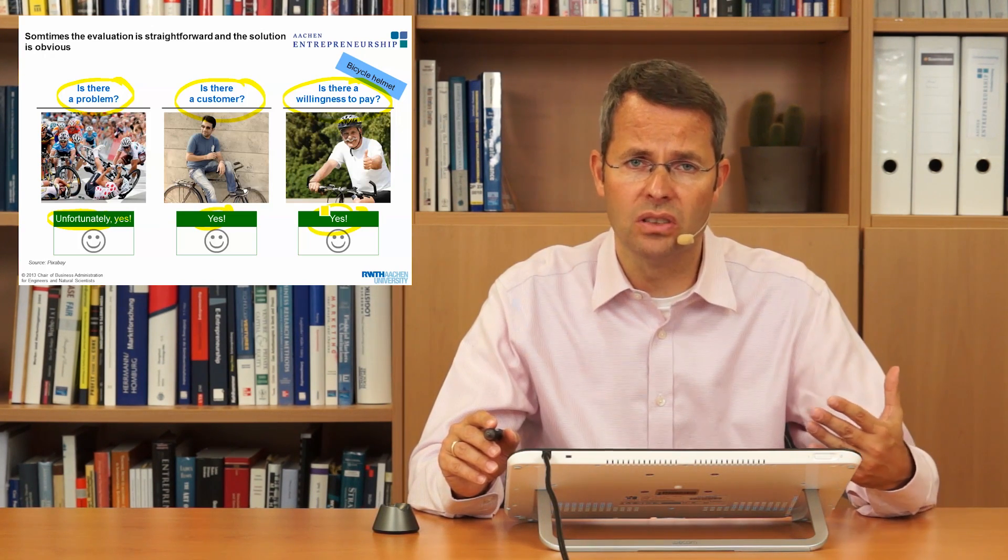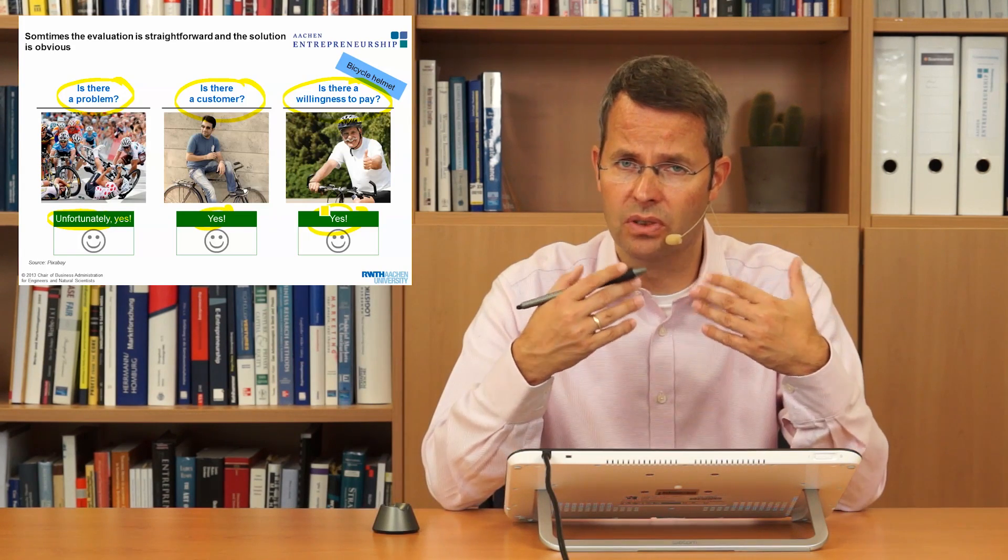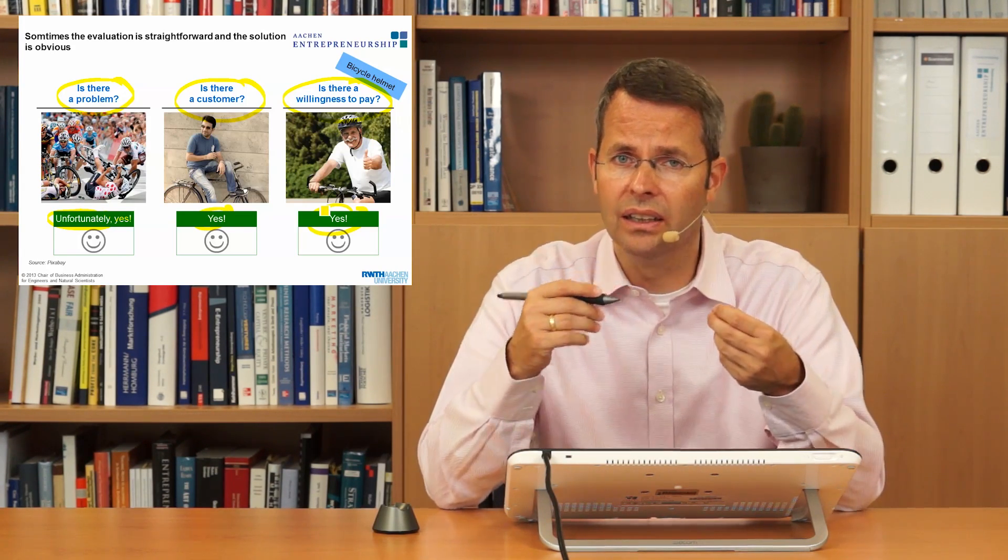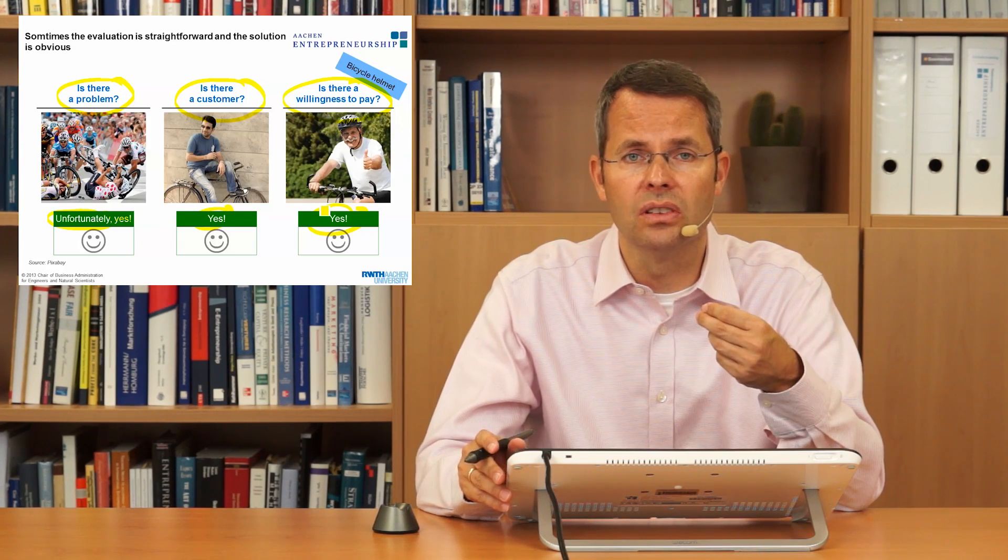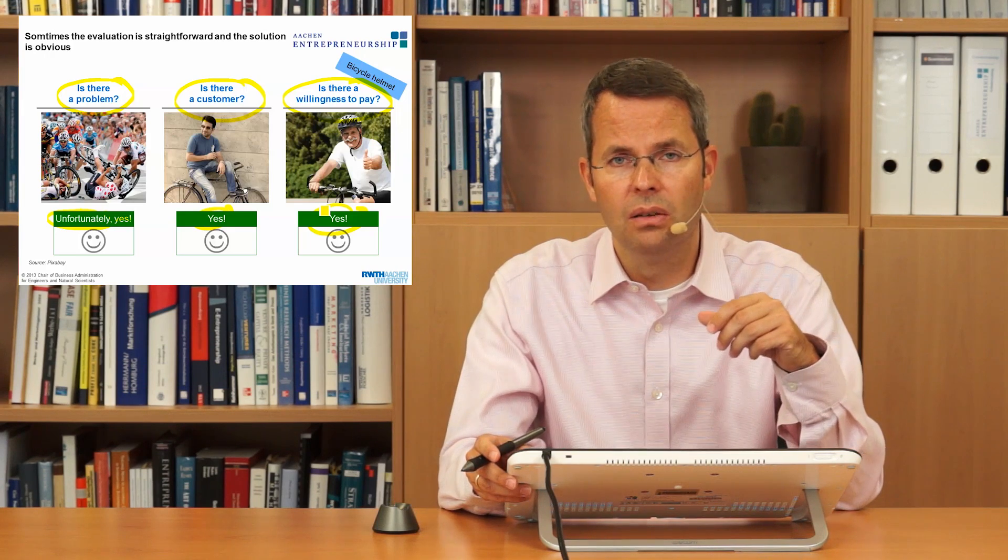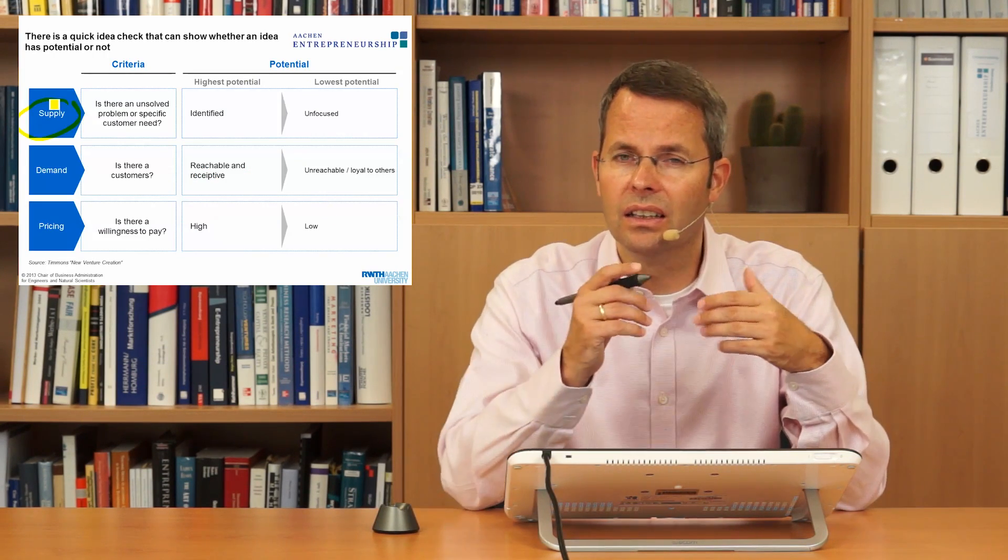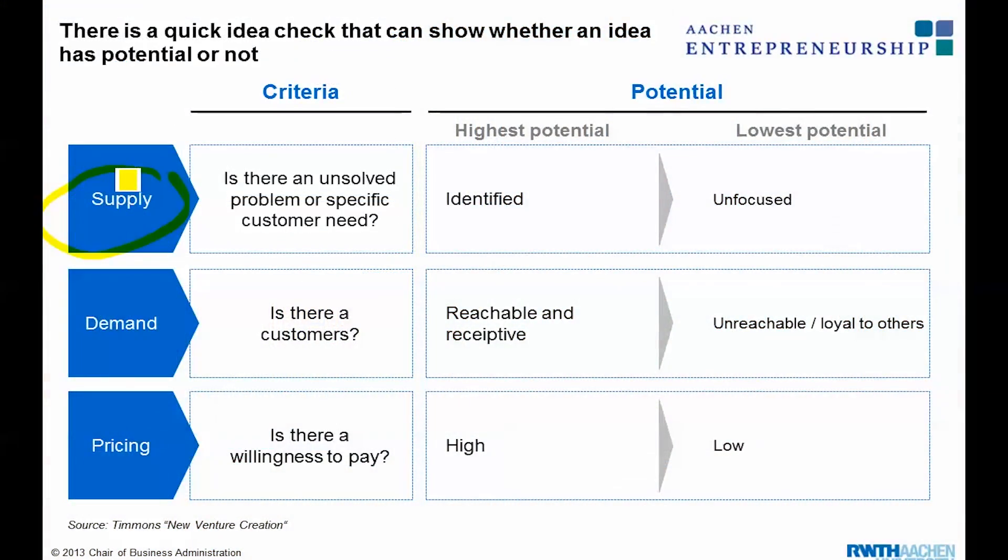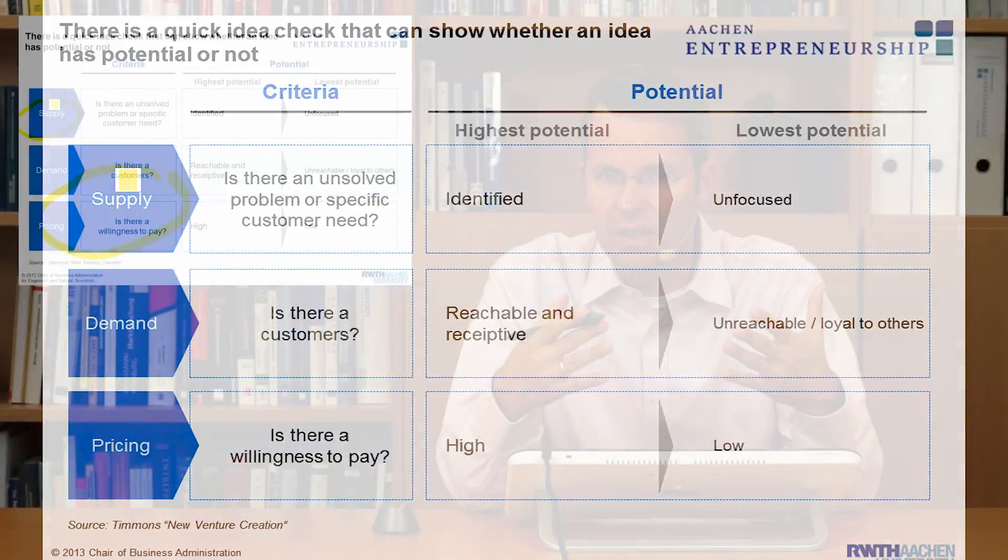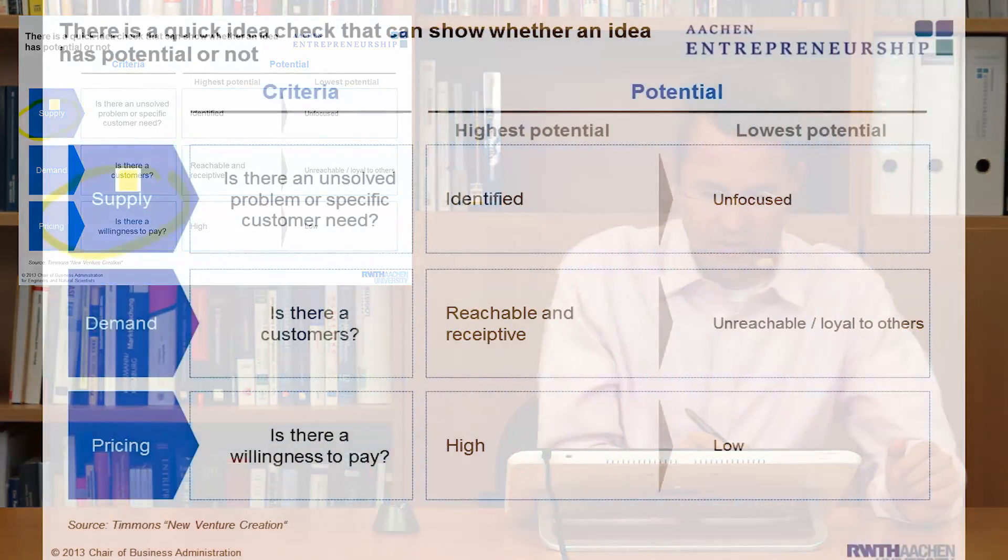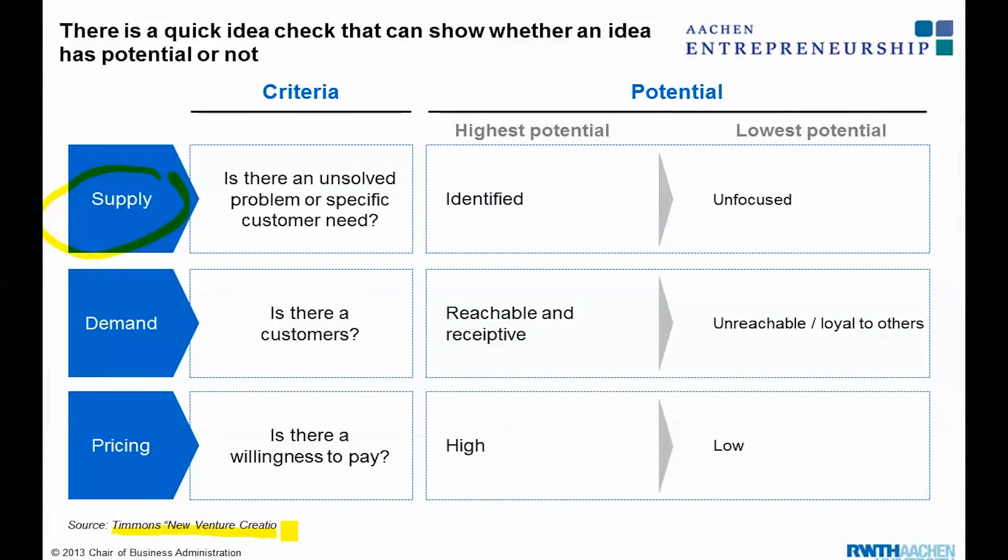And actually entrepreneurs, especially serial entrepreneurs, so entrepreneurs who have done that more than once, are very, very quick in asking these questions and answering them for themselves in order to know whether they should think a little more about these good ideas. When you answer these three questions, you can also do it in a slightly different way, as Jeffrey Timmons says in his book, New Venture Creation.